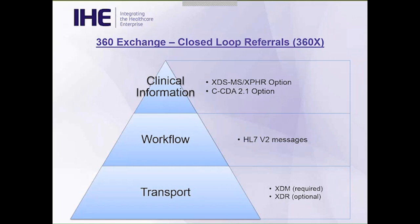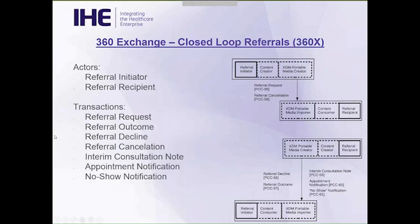You can also use the appropriate CCDA 2.1 options. The 360X has two actors — referral initiator and referral recipient — and seven transactions. The most common workflow, or happy path, consists of a referral request and the referral outcome transactions. The referral initiator initiates using a referral request to the referral recipient, and then the referral recipient provides the referral outcome back to the referral initiator. More information can be found in the details within the profile.